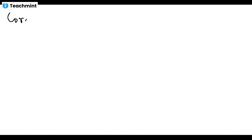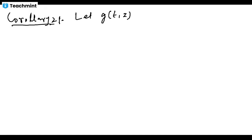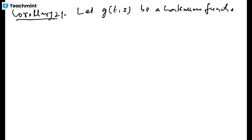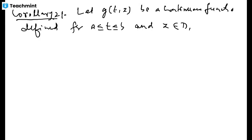Let's look at another corollary, again proven using the theorem which characterizes harmonic functions. Corollary two: let g(t, z) be a function of t (a real variable) and z (a complex variable), be a continuous function defined for t ∈ [a, b] and z ∈ D where D is a domain. So the domain of definition of g is [a, b] × D.